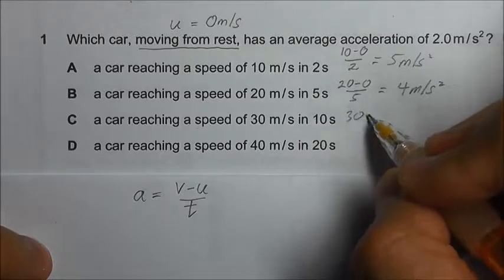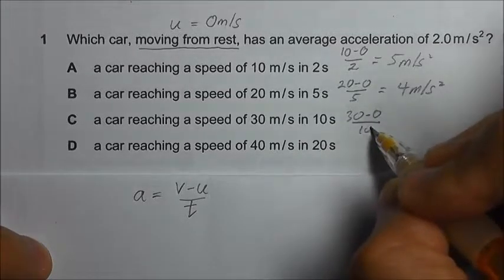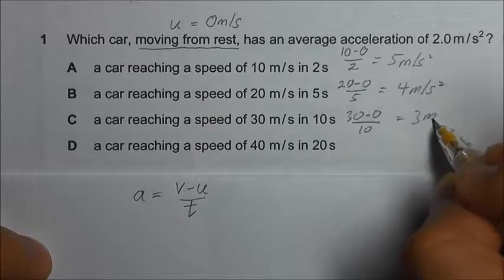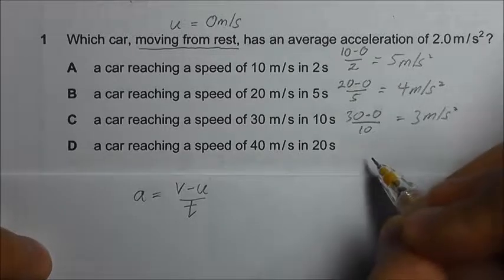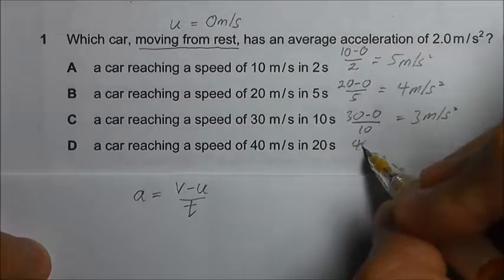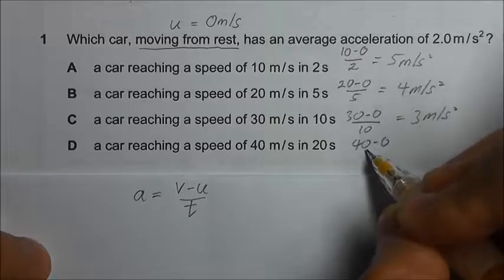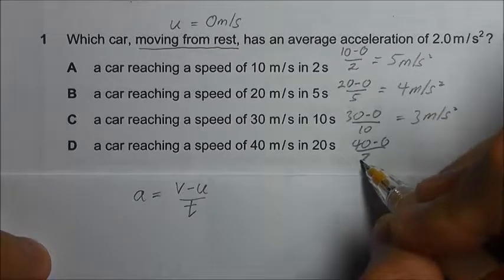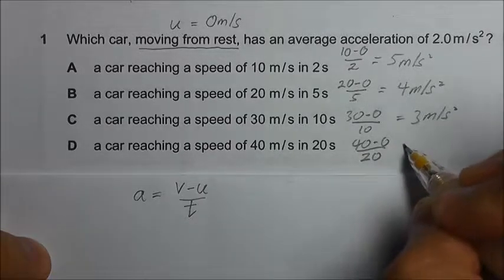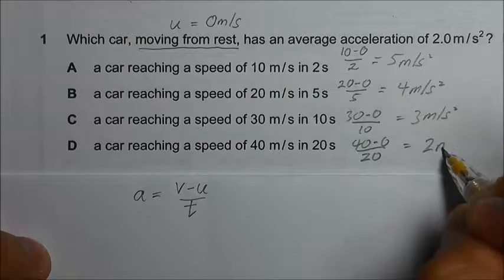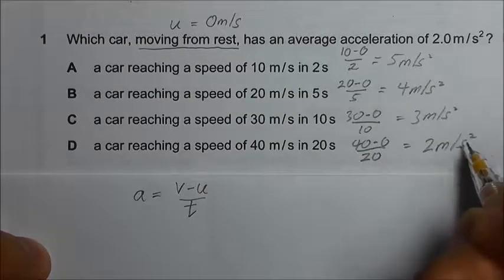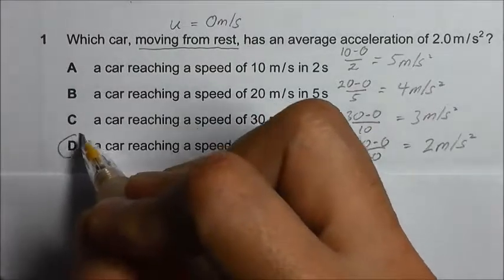Option C, 30 minus 0 divided by 10, we have 3 meter per second square. And option D, we have 40 minus 0 divided by 20, we will get 2 meter per second square. So the answer should be D.